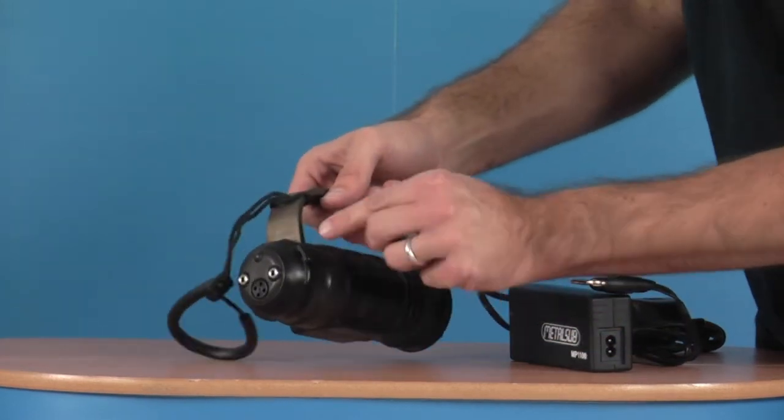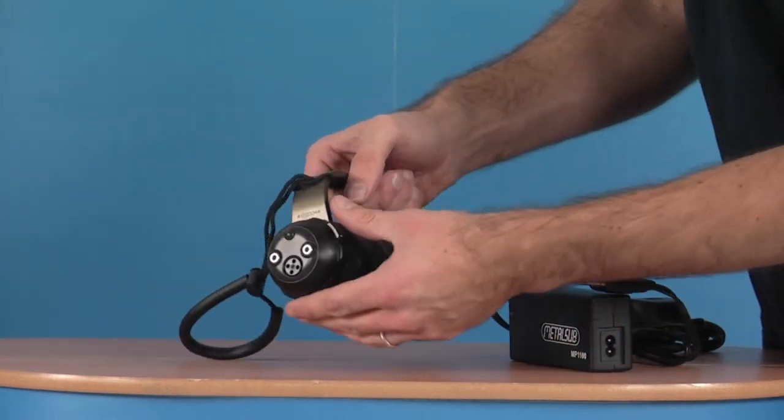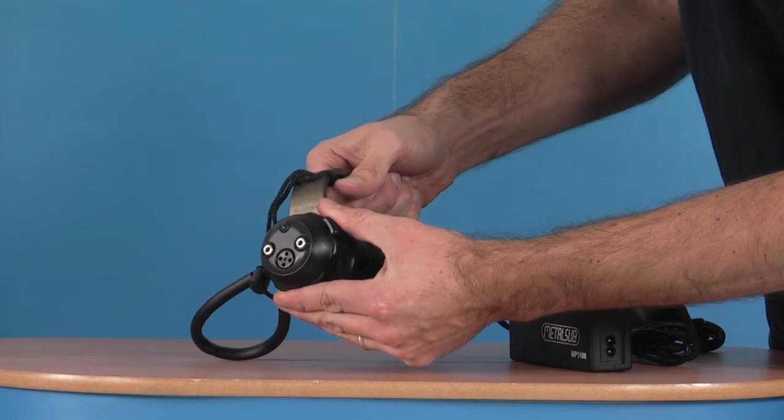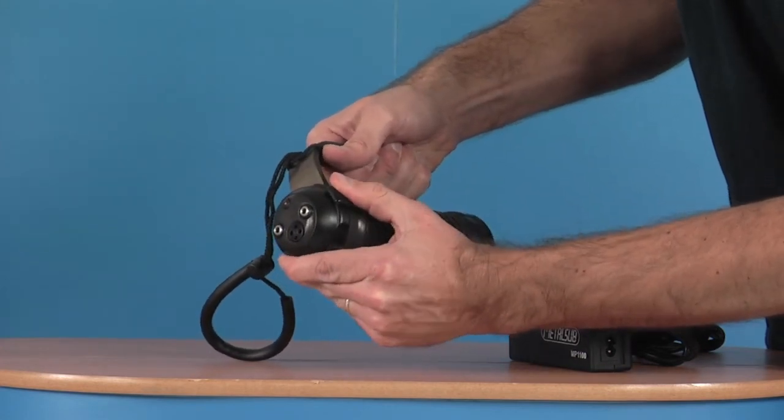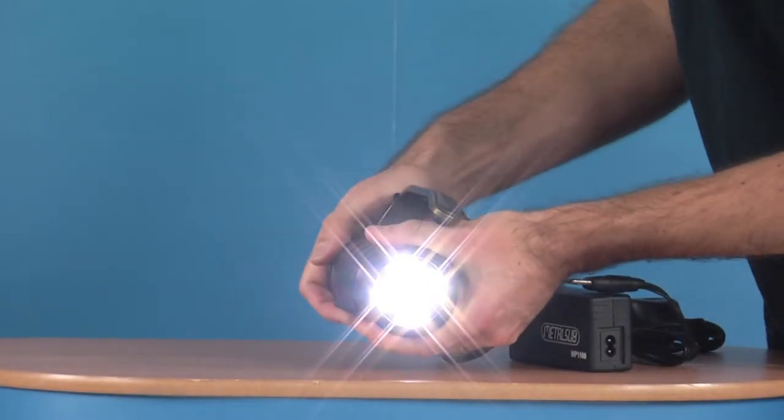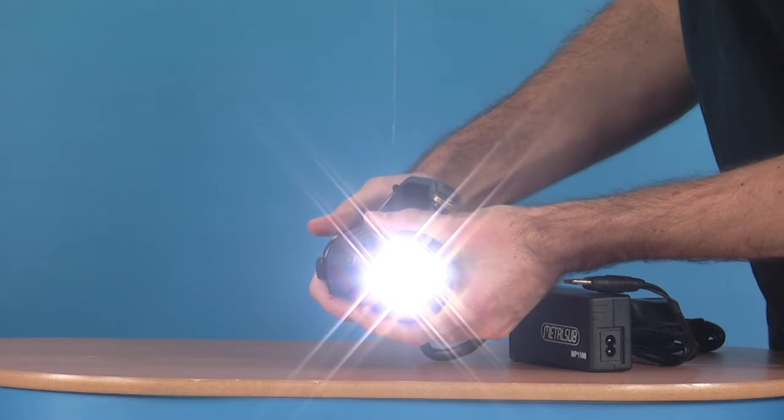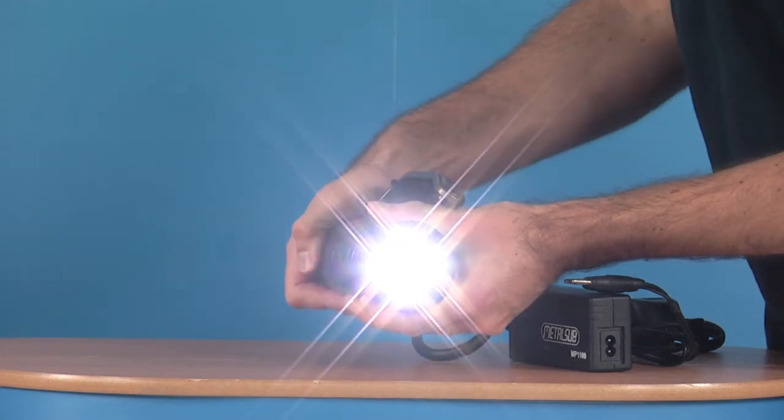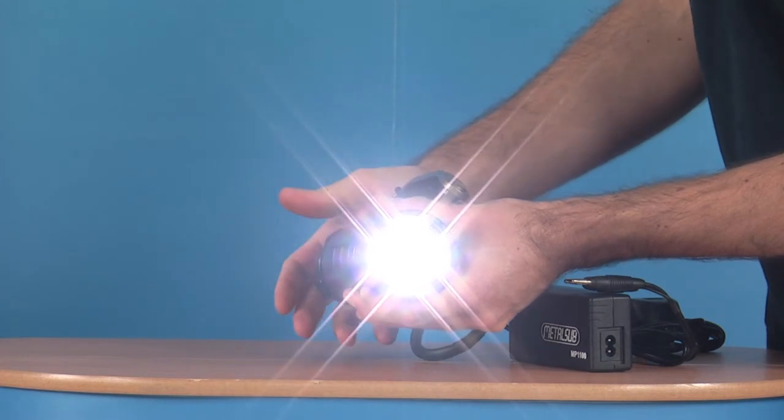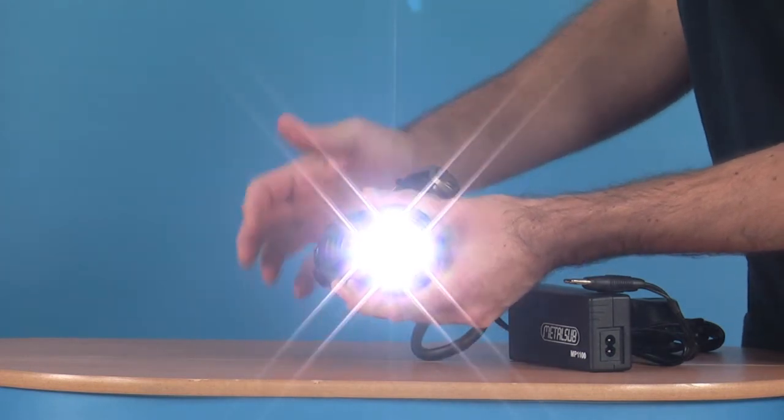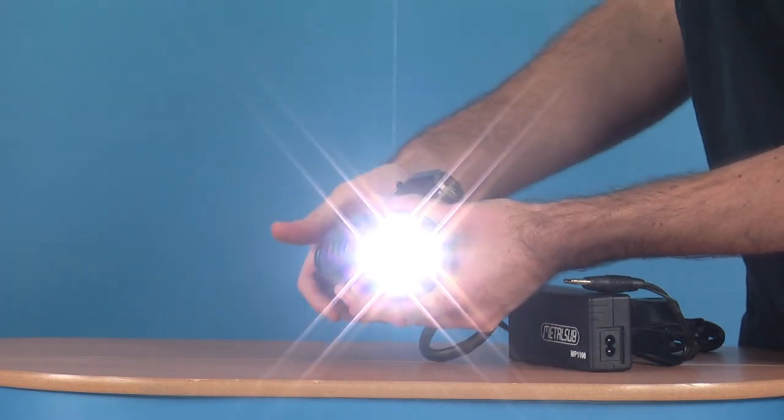To operate the torch you have this switch here. It has three levels. First you pull this backwards and twist and that will put it onto 50%. Backwards and twist again puts it onto 75. Back and twist again puts it onto 100. Now this isn't actually a fully charged version so your actual brightness will be brighter than you're seeing on the screen.